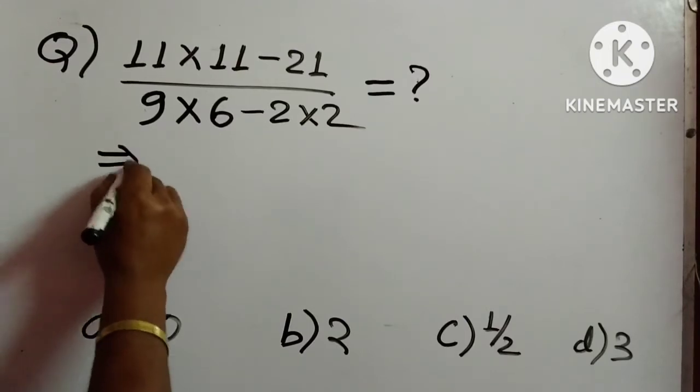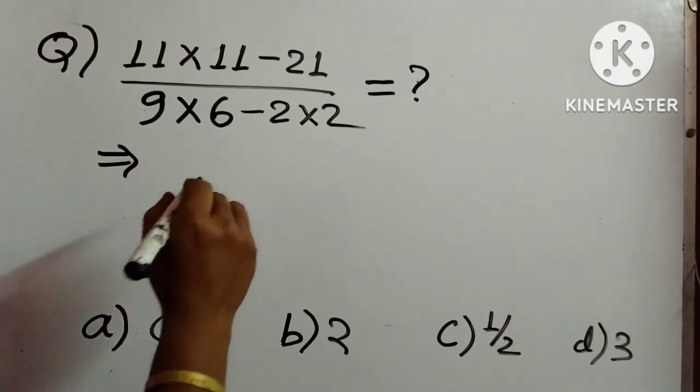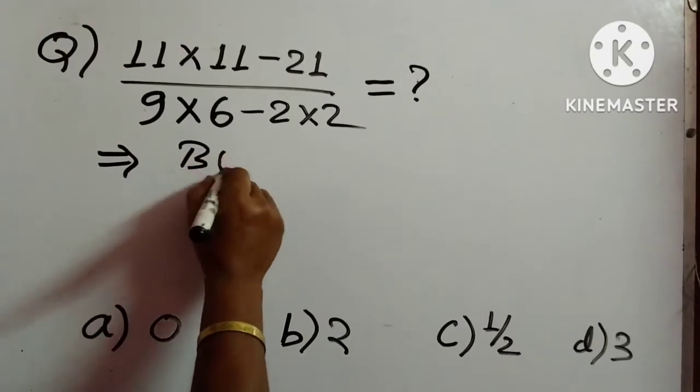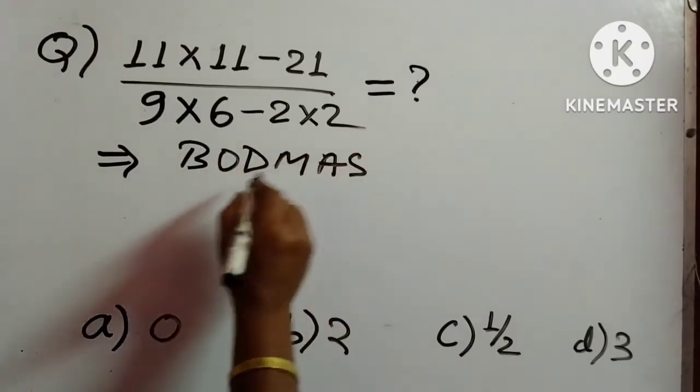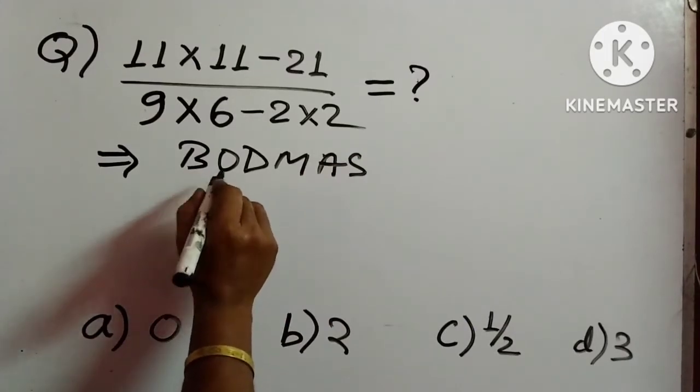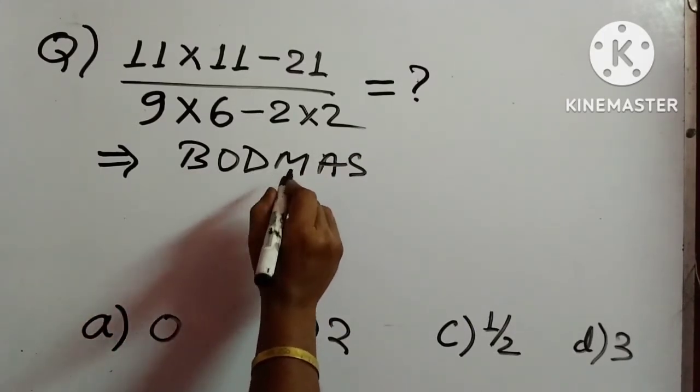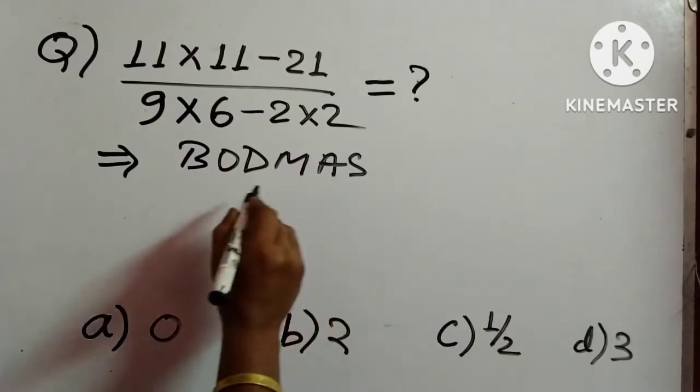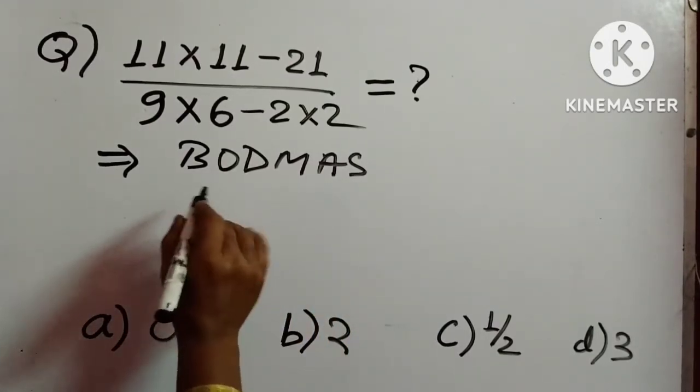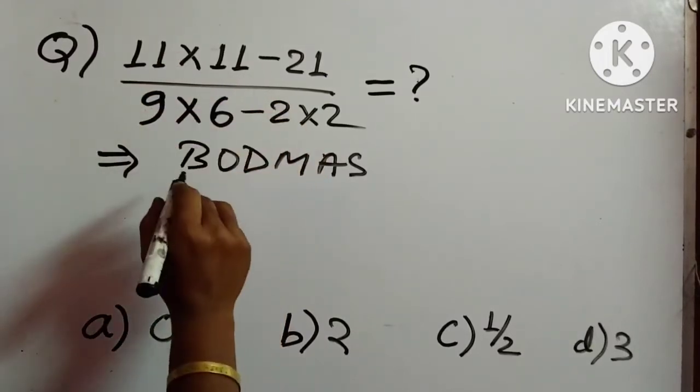In this type of question, we must always remember the formula BODMAS, where B stands for bracket, O for off, D for division, M for multiplication, A for addition and S for subtraction. This is the serial we will follow while solving this kind of problem.